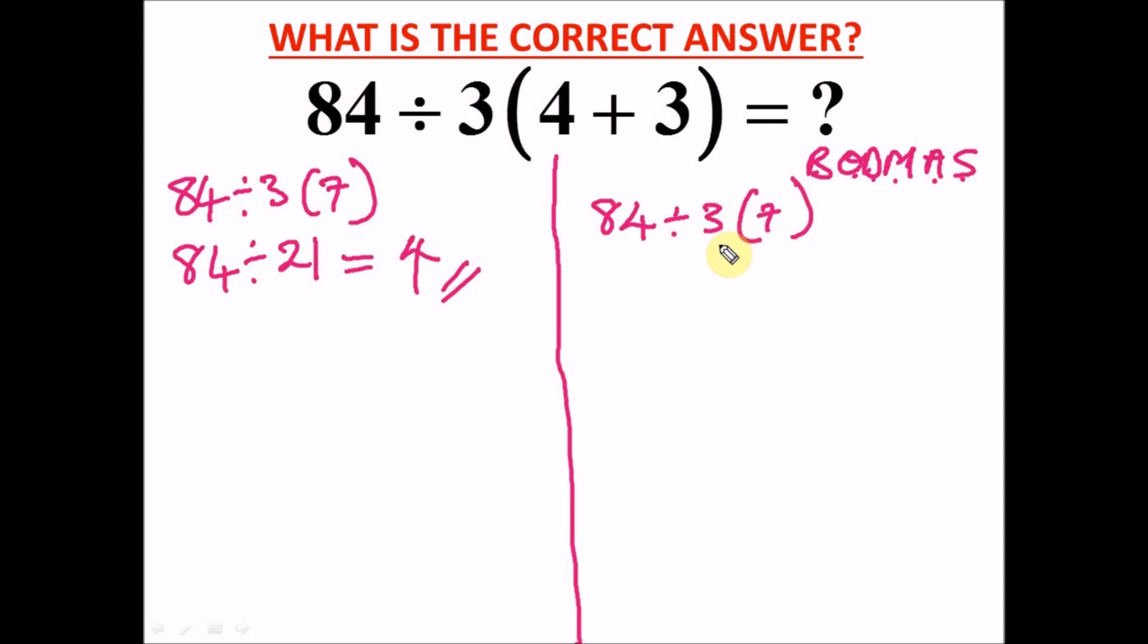If you have a bracket and you have a number in front of it, it means multiplication, right? Correct. So we have 84 divided by 3 times 7. Now go back to BODMAS, the order of operation. What is the next operation that we need to carry out? We have brackets which we solved. There's no 'of'. Division is the next operation in our order of operation rule.